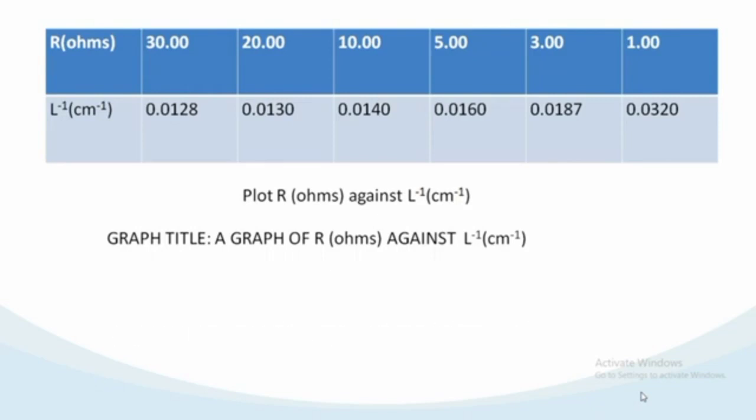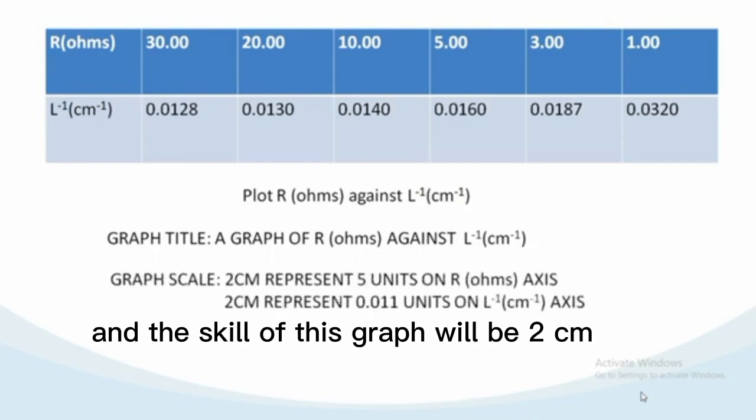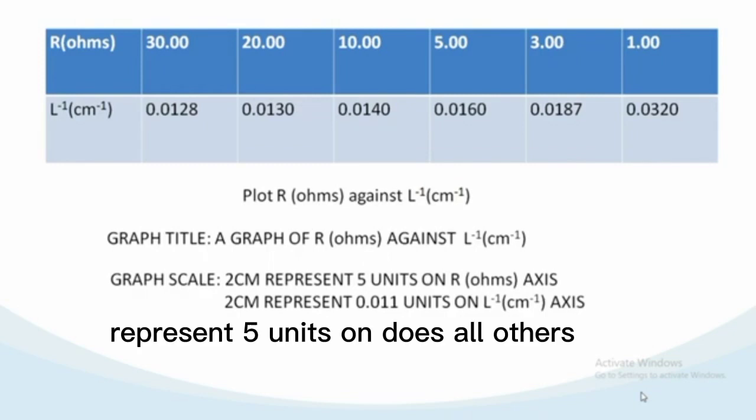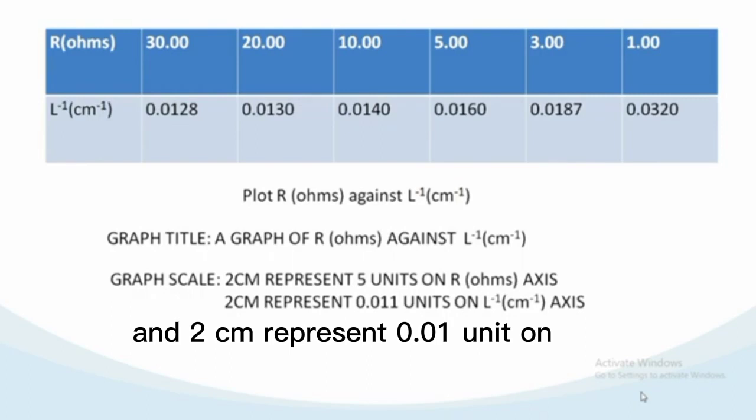We are plotting a graph of R in ohms against length inverse in centimeters^-1. The scale of this graph will be two centimeters to represent five units on R axis, and two centimeters to represent 0.01 units on length inverse axis.